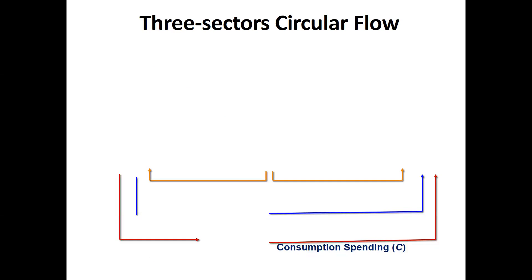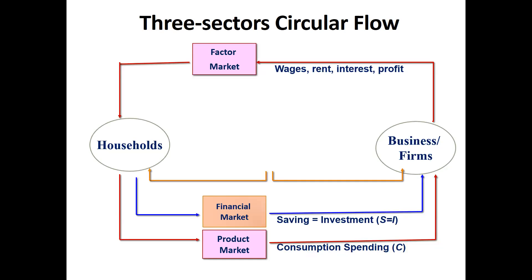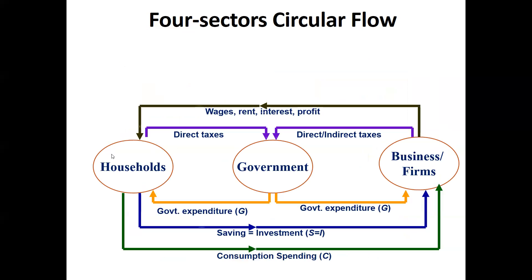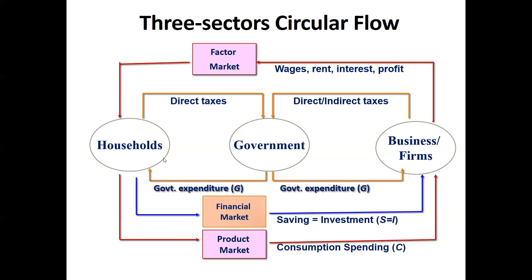Next we come to the three-sector circular flow. Three-sector means we are talking about only three sectors — household, business firm, and government. These are the three sectors. There is no involvement of the external economy, meaning no foreigners, and no involvement of imports and exports. That is the three-sector economy.